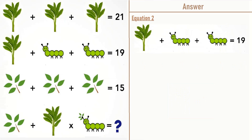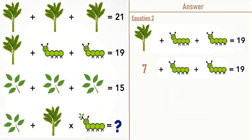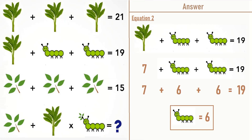Now taking equation number two, we have leaves plus a caterpillar plus a caterpillar is equal to 19. From equation one we have leaves is equal to 7, so 7 plus caterpillar plus caterpillar equals 19. 7 plus 6 plus 6 is equal to 19, so a caterpillar is equal to 6.